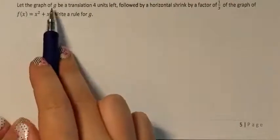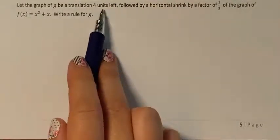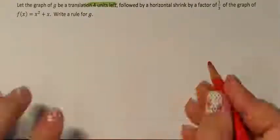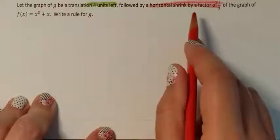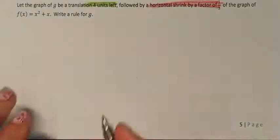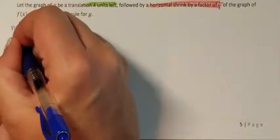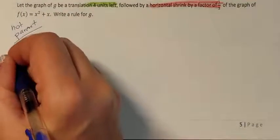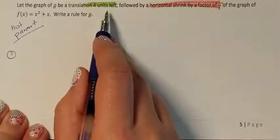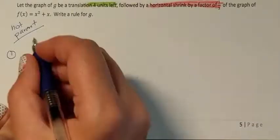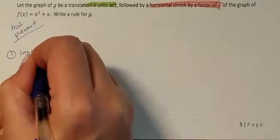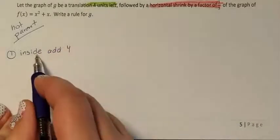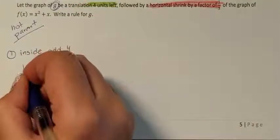Last problem: let the graph of g be a translation four units up, followed by a horizontal shrink by a factor of one-third, and they give us a function that is not the parent. Since it is not the parent, we use our Chapter 1 skills. Step 1: it said to go up four. Going up is an outside add 4 move.